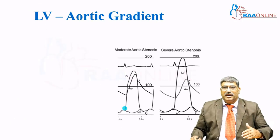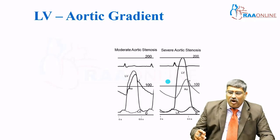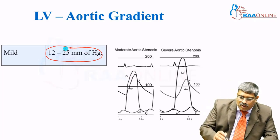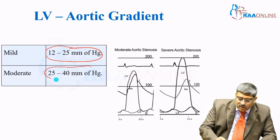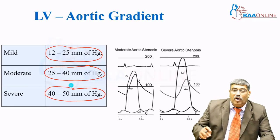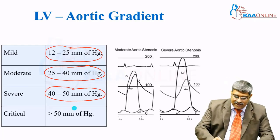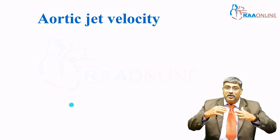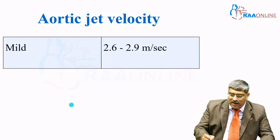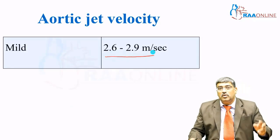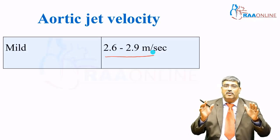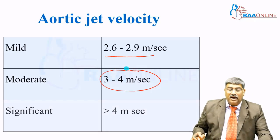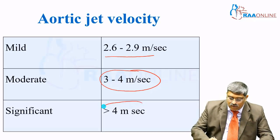The LV-aortic gradient is the gradient between the left ventricle and the aorta. Normally it is less than 12 mmHg. In mild stenosis it is 12–25 mmHg; moderate is 25–40 mmHg; severe is 40–50 mmHg; and critical is greater than 50 mmHg. For aortic jet velocity, mild stenosis is 2.6–2.9 m/s (normal velocity is 0.5–2 m/s); moderate is 3–4 m/s; and significant stenosis is greater than 4 m/s.